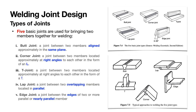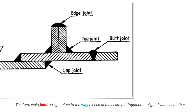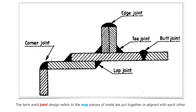The term weld joint design refers to the way pieces of metal are put together or aligned with each other, and the configuration of these members are basically five types: butt joint, fillet joint, corner, and edge. In some of these pictures you can see the orientation plane for butt joint, corner joint, fillet joint, lap joint, and edge joint. This is a very good example of the types of joints, and you can see that all five types of joint are present in the picture.